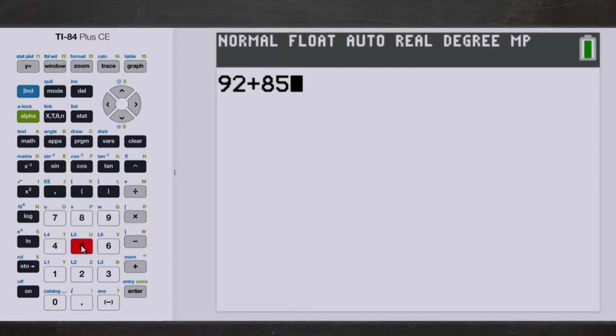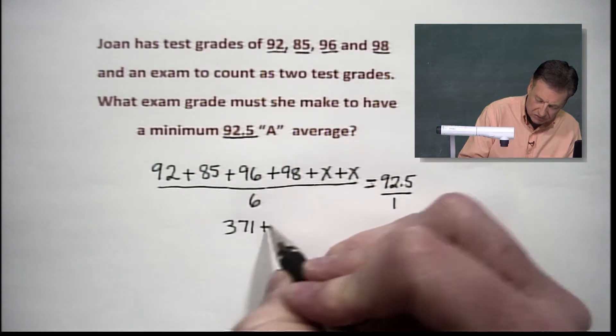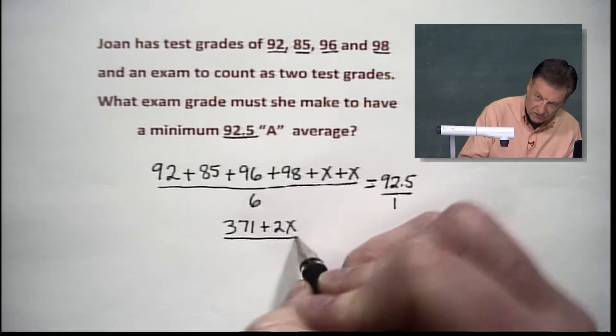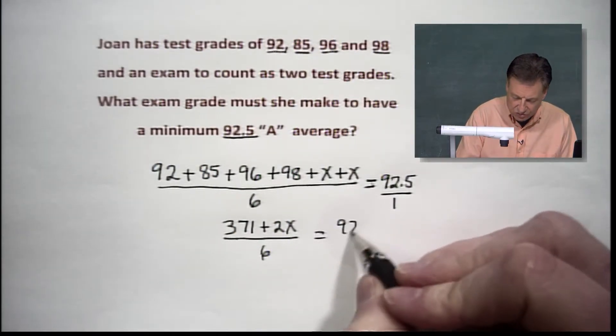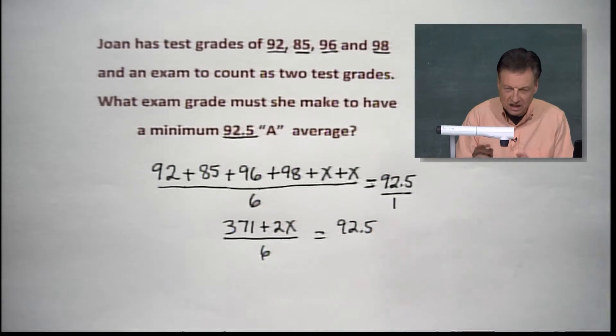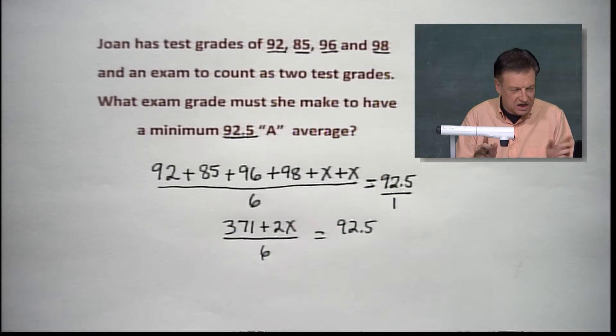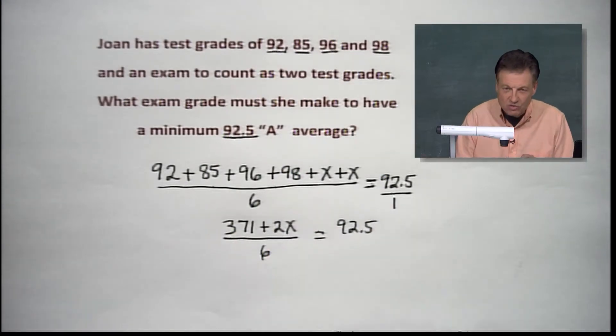And let's take 92. We're going to add 85. We're going to add 96. On top of that, we're going to add 98 and see where we are at this point. Looks like we are at 371. So we're going to make this a little bit easier to look at. We're going to say 371 plus 2x over 6 equals 92.5. Now I feel a lot more comfortable. You say, why do you feel more comfortable? I just don't have all this string of numbers there. We took care of them. We added them up. They came out just what we wanted them to.